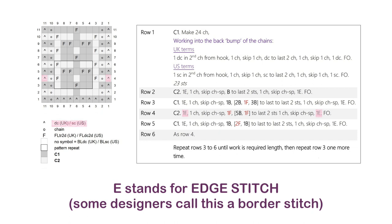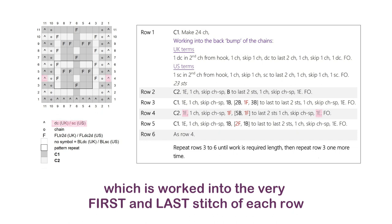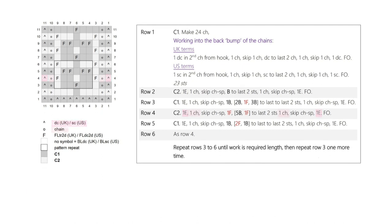E stands for edge stitch — some designers are going to call this border stitch — and that's worked into the very first and last stitch of each row. This represents a standard single crochet or double crochet, worked into both loops.